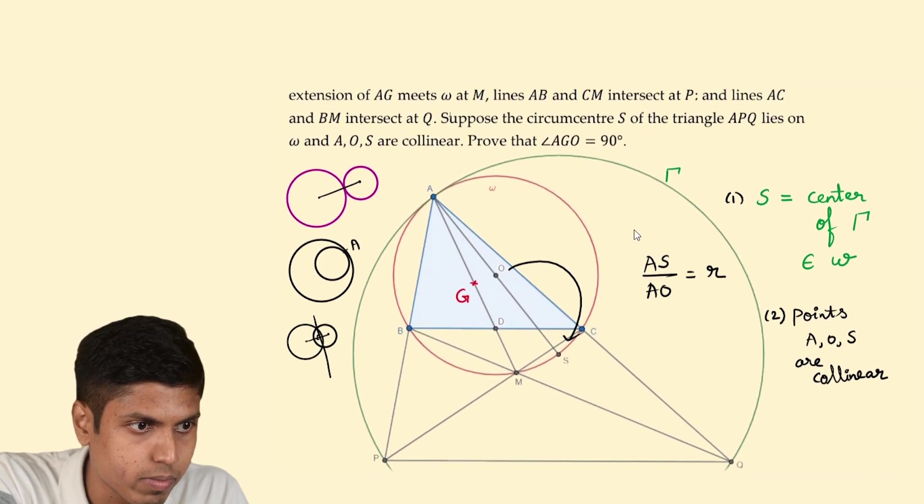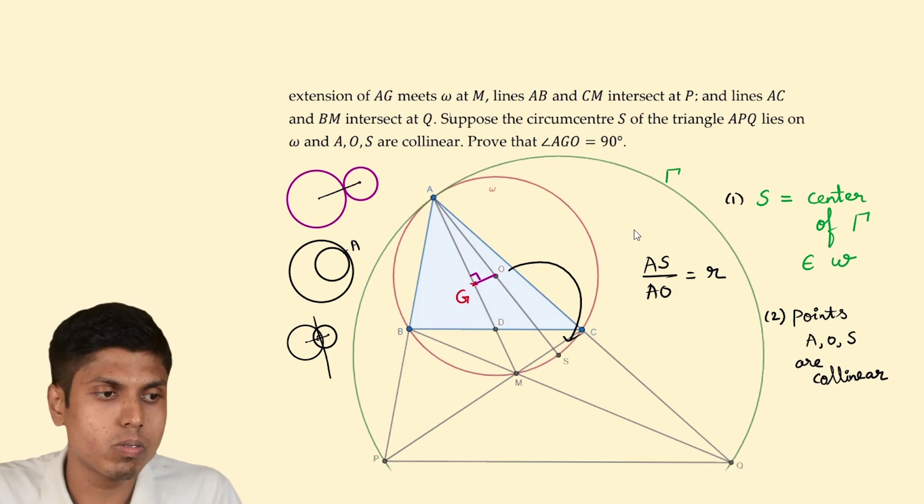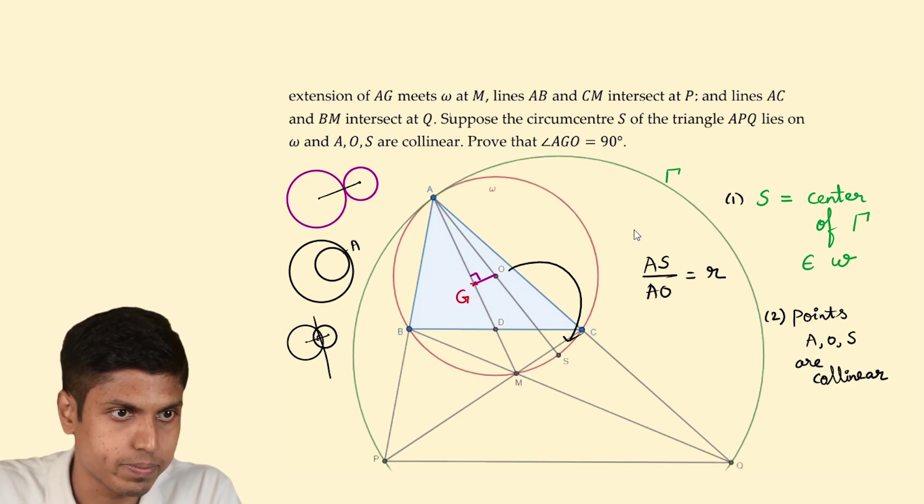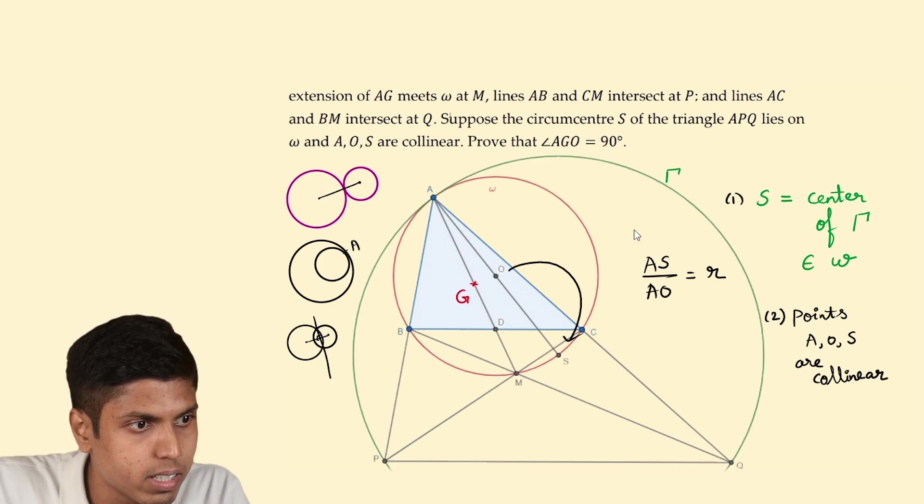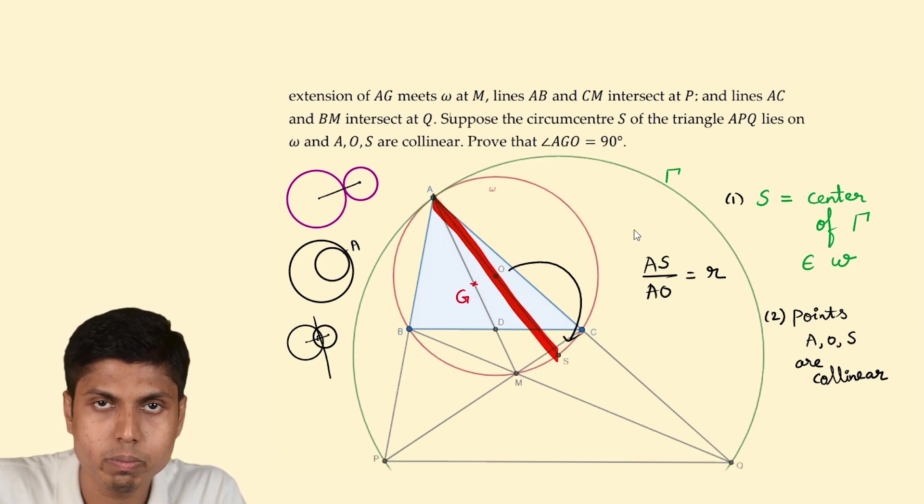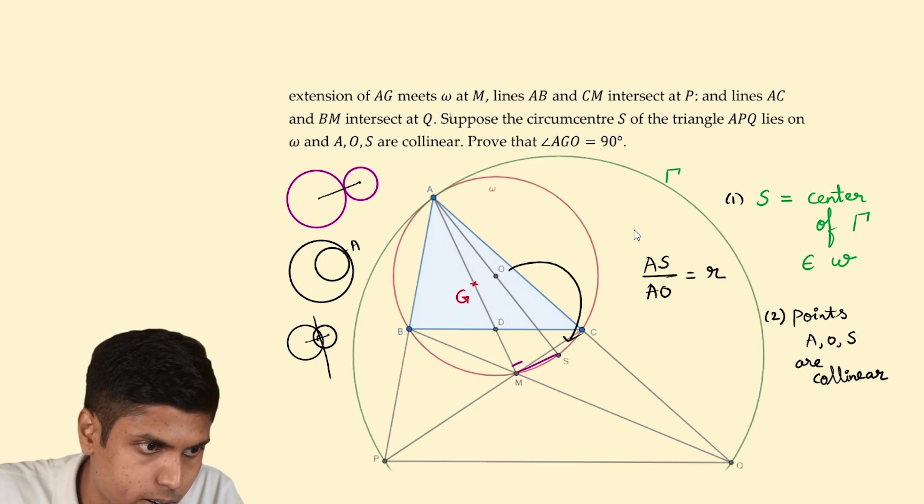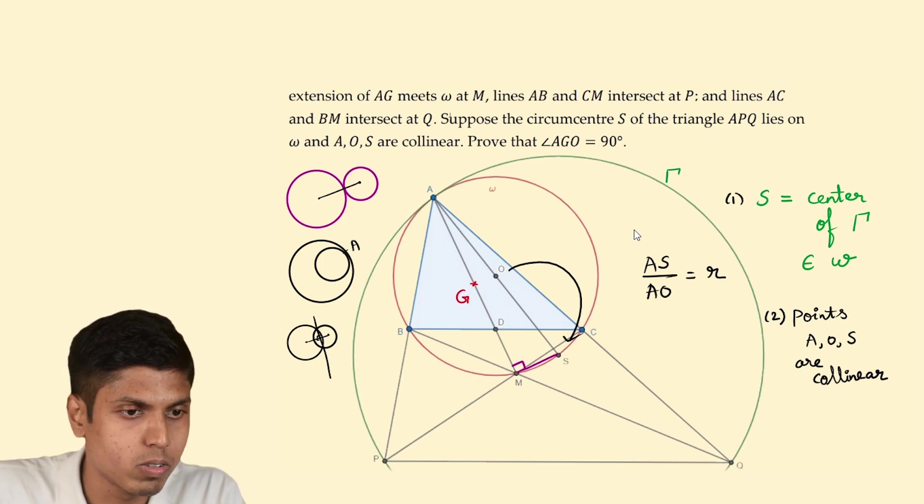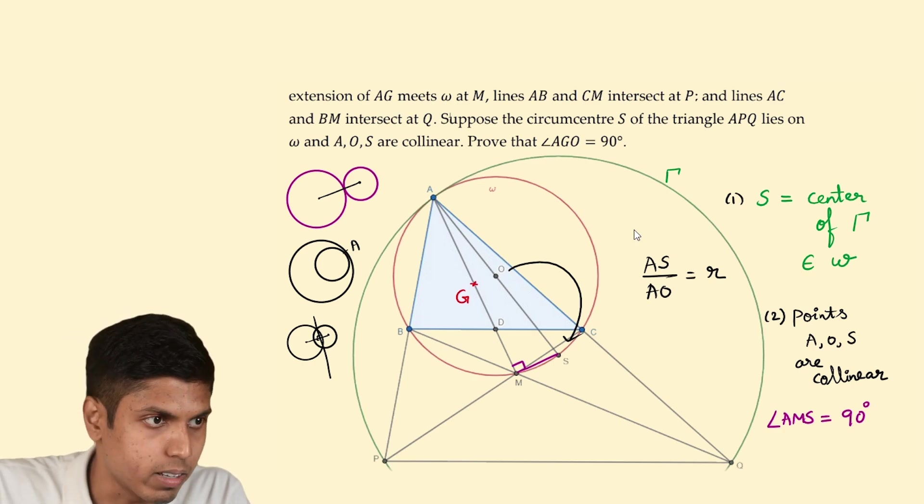Now let's go back to our diagram. We have to prove that angle AGO equals 90 degrees. Let's see how this relates homothetically to the transformed diagram. AS is the diameter of the circle omega because it passes through its center. Thus, angle AMS should be 90 degrees. So we will have this as one of our consequences.